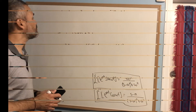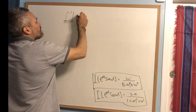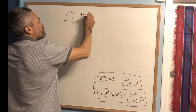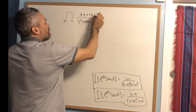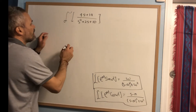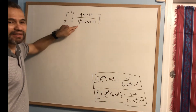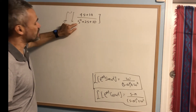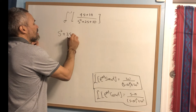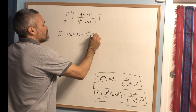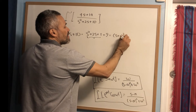Let's do a more challenging problem: compute the inverse Laplace transform of (4s+14) over (s²+2s+10). The denominator doesn't immediately match our formula, so the key step is completing the square. We write s²+2s+10 as s²+2s+1+9, which equals (s+1)²+9.